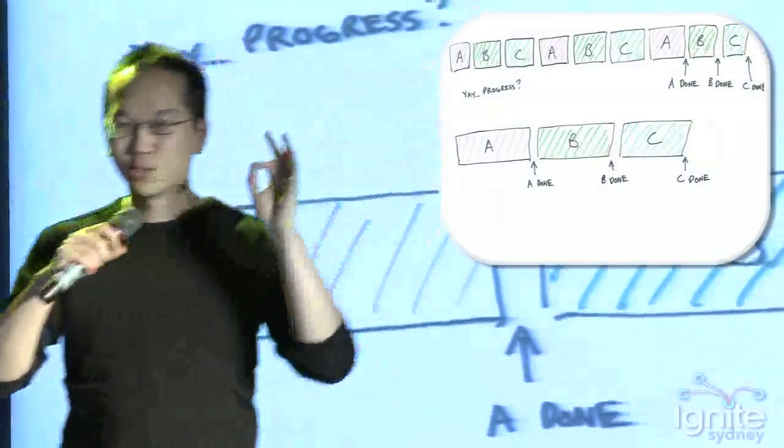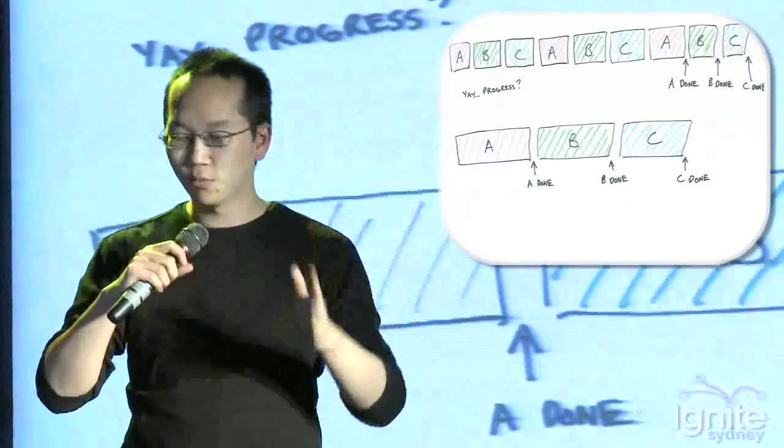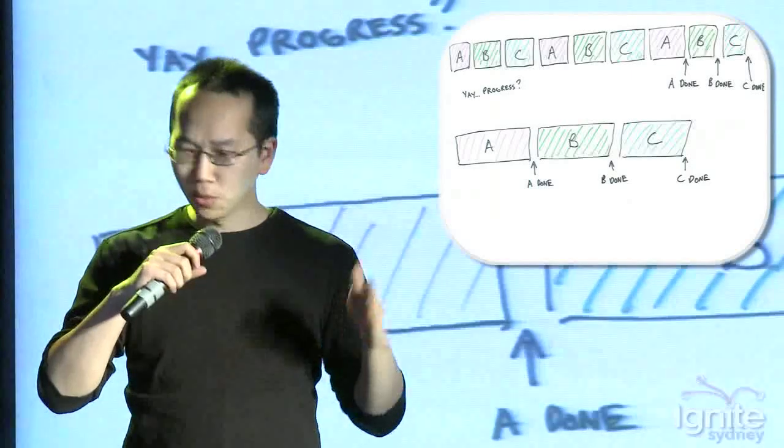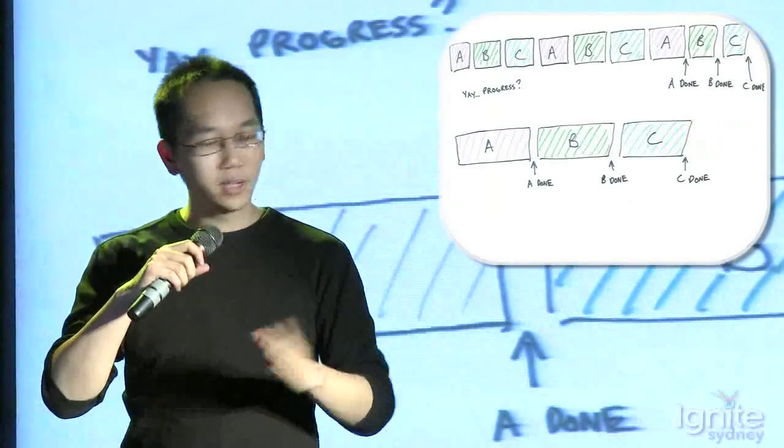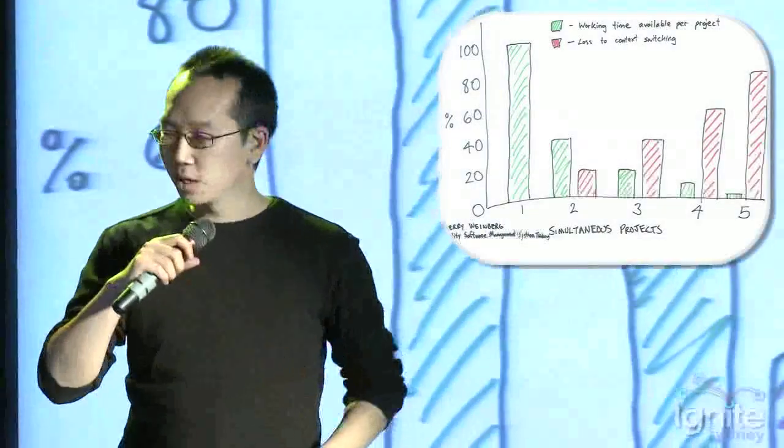So I'm going to just try to destroy that illusion right now, and show that if we just serialize the work, so we do this differently, we actually finish things faster. So in this case, you can see that A finishes dramatically faster than it did previously, and C, even though it's near the end, is still pretty close.